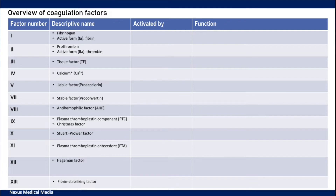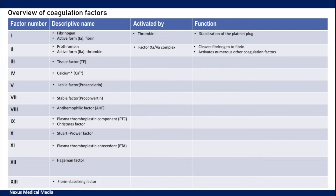Factor 1 is activated by thrombin and its function is stabilization of the platelet plug. Factor 2 is activated by a complex of factor 10 and factor 8, the active forms. The function of factor 2 is cleavage of fibrinogen to fibrin and it also activates numerous other coagulation factors.